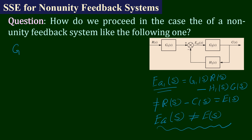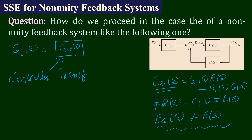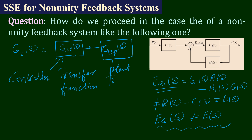G2(s) can be broken into two blocks: G2c(s), which is the controller transfer function, and G2p(s), which is the plant transfer function, connected in series. In this situation we need to analyze the steady-state error, and the steady-state error will be obtained from E(s) using the final value theorem.